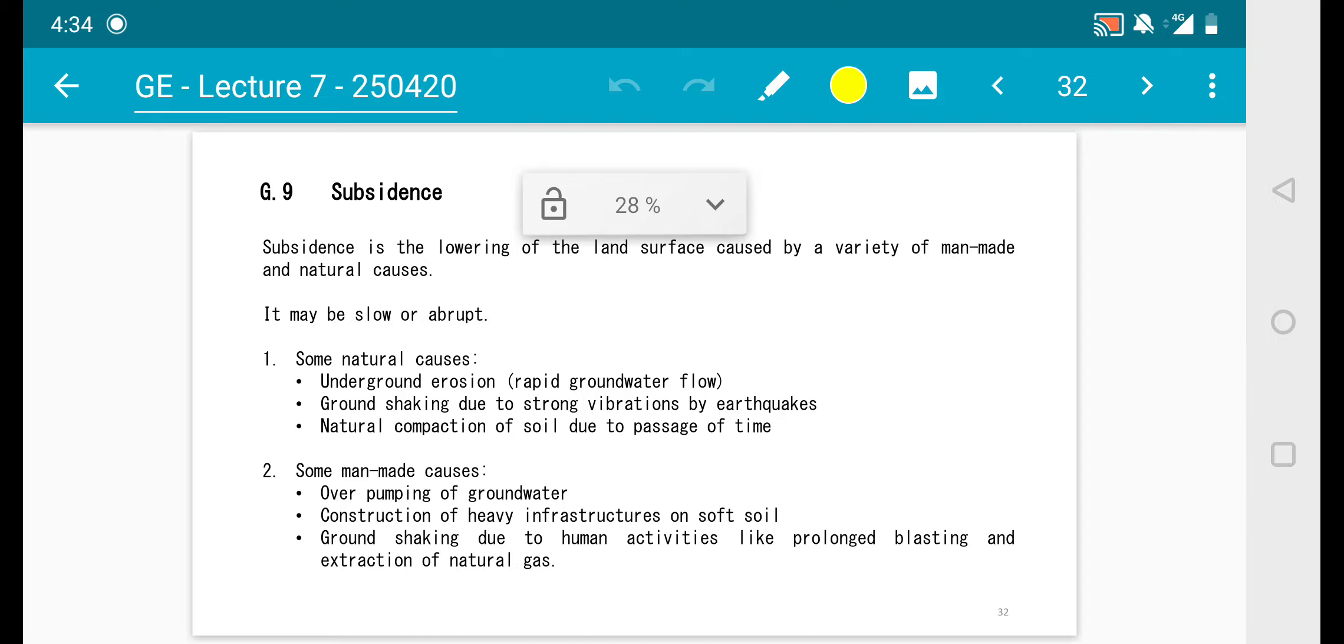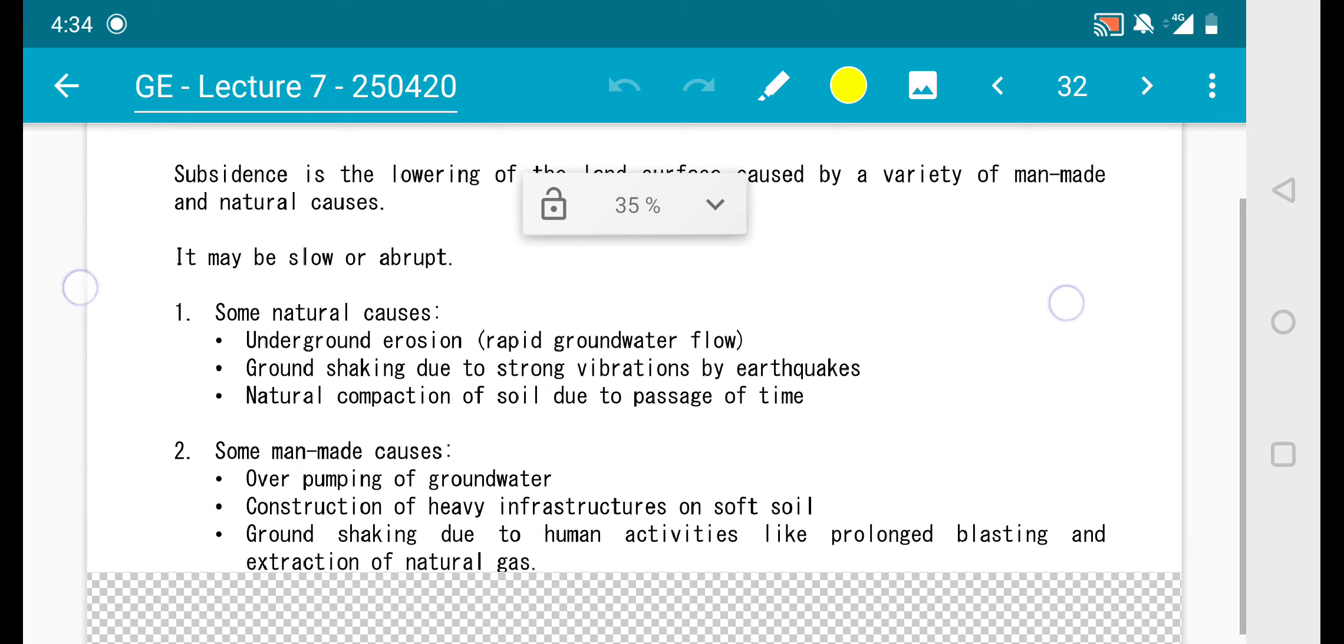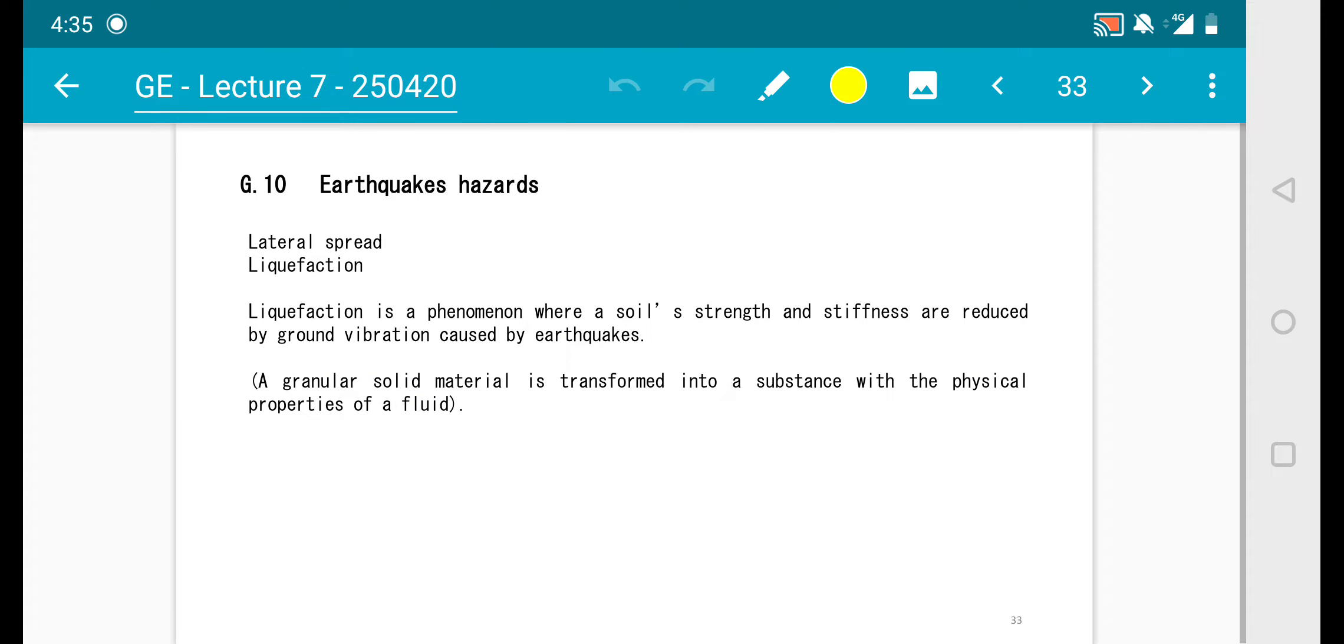Now we're going to look at another type of geotechnical hazard which is on subsidence. This is the lowering of the land surface caused by a variety of man-made and natural causes as well. It may be slow or abrupt. You have the initial position of the land and it becomes lower due to underground erosion, ground shaking, and natural compaction. This is under natural causes. For man-made causes, it's due to over-pumping of groundwater, construction of heavy infrastructure on soft soil, and also ground shaking due to human activities.